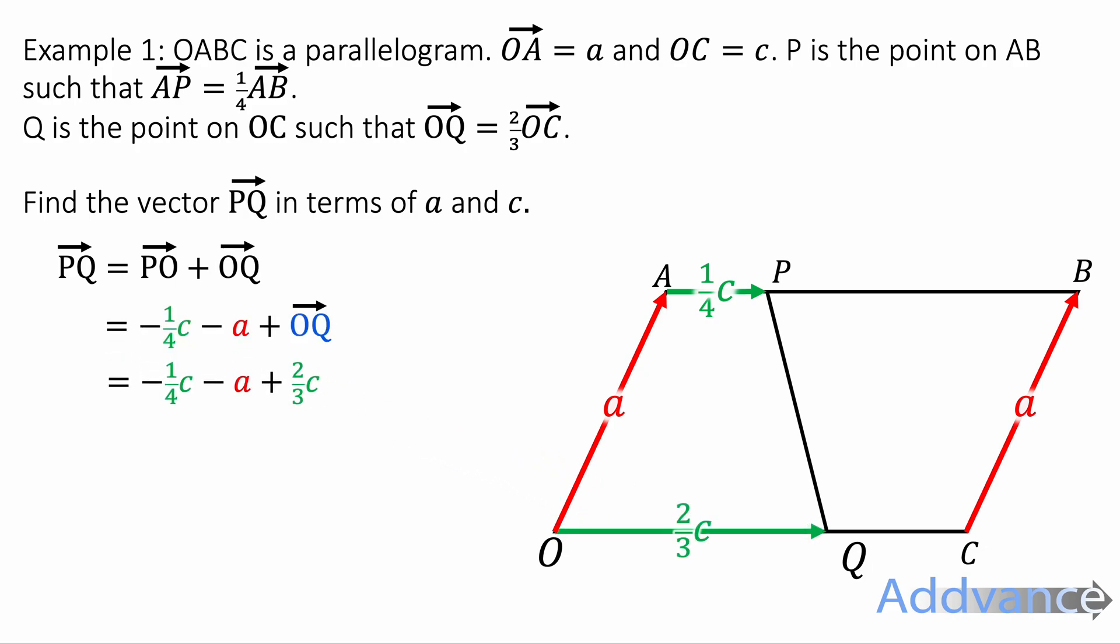Now we're going to go from O to Q and to go from O to Q we need to go forwards two thirds of c. So we're going to add two thirds of c on the end. Now that is a vector PQ in terms of a and c, but we need to simplify it. We'll simplify it with common denominators. Minus 3 twelfths of c plus 8 twelfths of c is 5 twelfths of c. And there we have it. PQ in terms of a and c. That is the final answer.